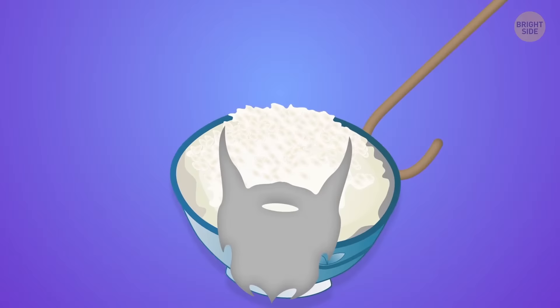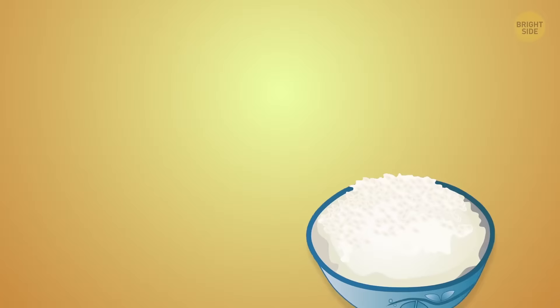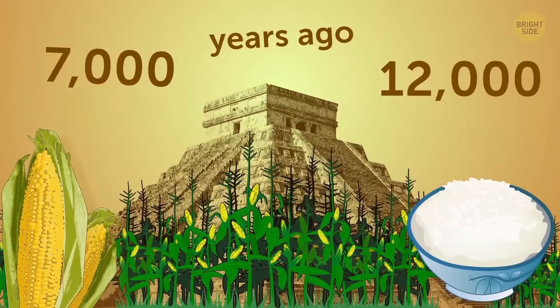Rice is the oldest food on your plate. And I don't mean it's expired. Rice is the product people have been cultivating for the longest time, from 12,000 to 15,000 years. It first appeared in ancient China's Pearl River Valley thousands of years ago. The only other food that's almost as old is corn. Native people in Mexico started growing it between 7,000 and 12,000 years ago.